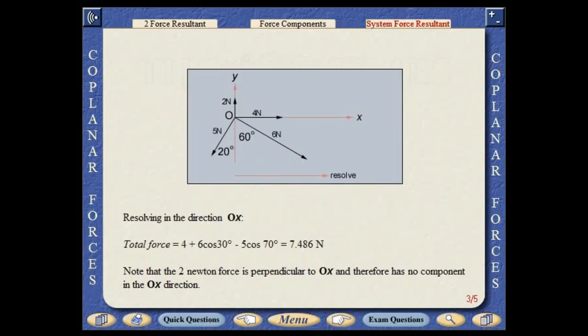Resolving in the direction OX, total force equals four plus six cos 30 degrees minus five cos 70 degrees, which equals 7.486 newtons. Note that the two newton force is perpendicular to OX and therefore has no component in the OX direction.